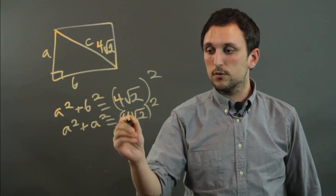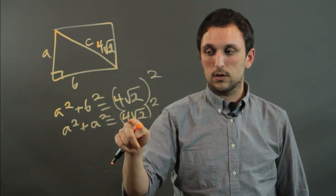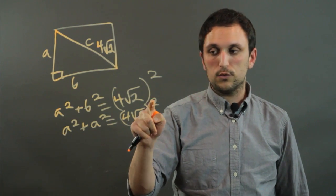And 4 root 2 squared is going to be 32, because 4 times 4 is 16, and root 2 times root 2 is 2.